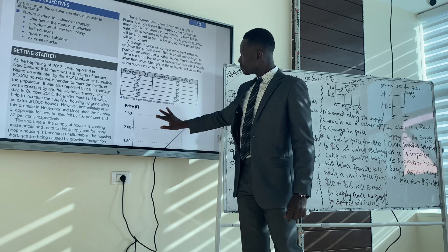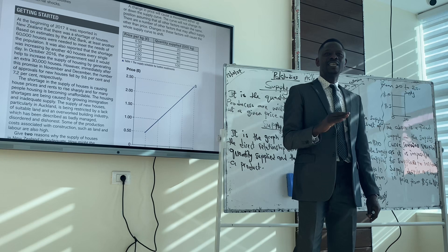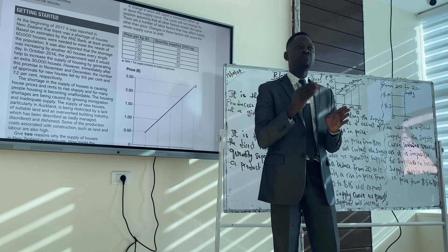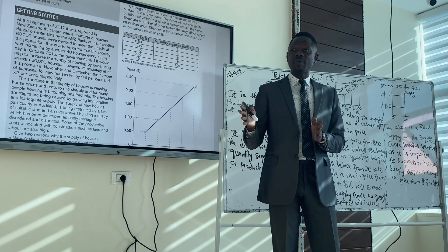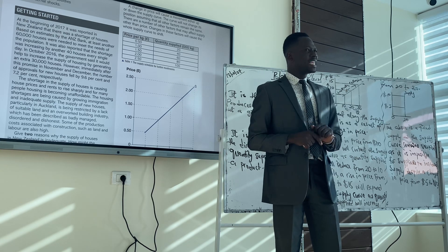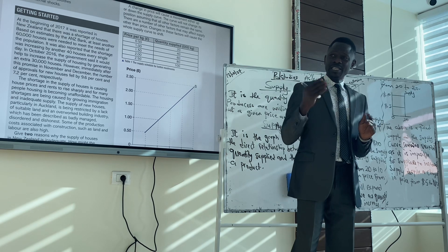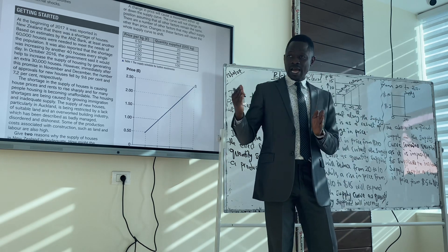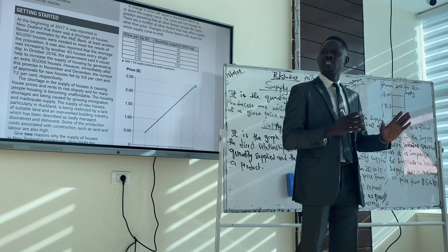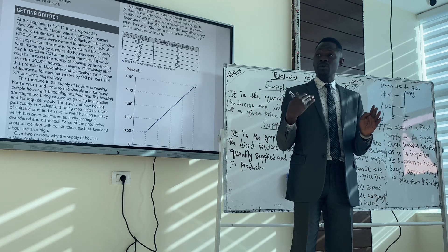Then we go to the supply curve. We call it a curve because it's a graph that represents the direct relationship between the quantity of supply and the price of a product. It's a direct relationship because of the law of supply: the higher the price, the higher the quantity supplied; the lower the price, the lower the quantity supplied. So there's always a direct relationship, unlike demand, which is inverse.